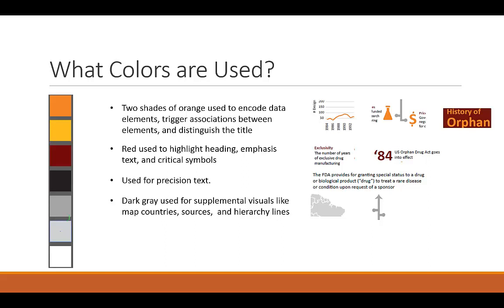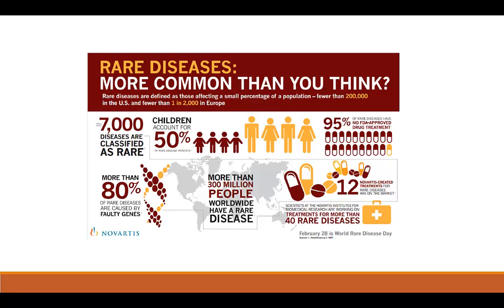Dark gray is used for supplemental visuals like the uncoded countries in the map and the hierarchical lines in the relationship graphic. White-gray is used for framing elements to provide visual hierarchy over the white background.